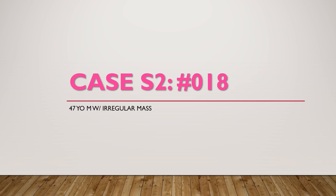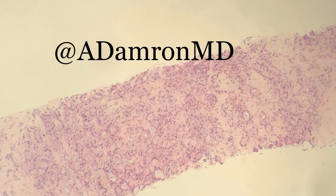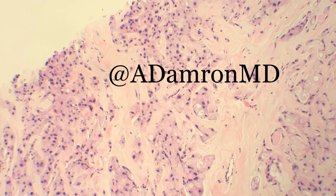Moving on to our next case: a 47-year-old male with an irregular mass. Male breasts typically don't have lobules — just ducts — and most of the time a male with a mass generally has gynecomastia, but male breast cancer is a thing. We have clear gland formation infiltrating throughout the stroma with no definitive pattern. These cells have very prominent nucleoli and very abundant pink cytoplasm. Taking a closer look, we can appreciate the true infiltrative pattern — single cells infiltrating through the stroma without a myoepithelial cell layer, with central nuclei, very smooth contours, a prominent nucleolus, and finely granular cytoplasm.